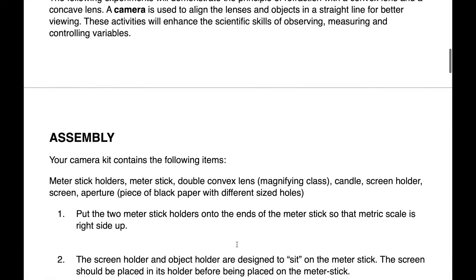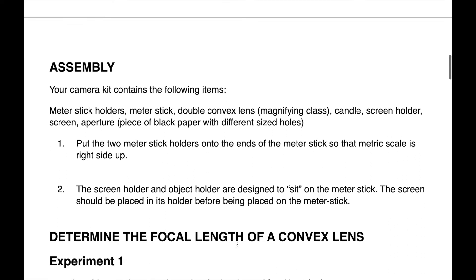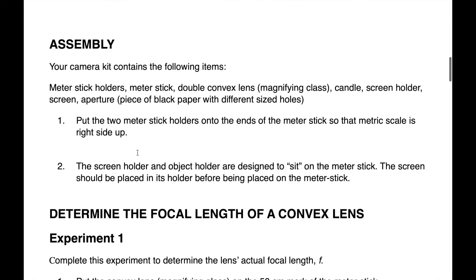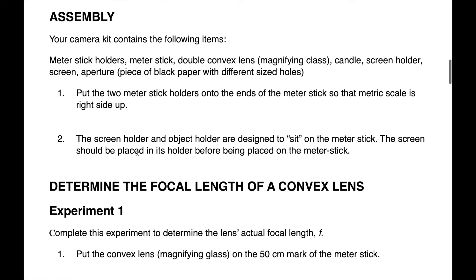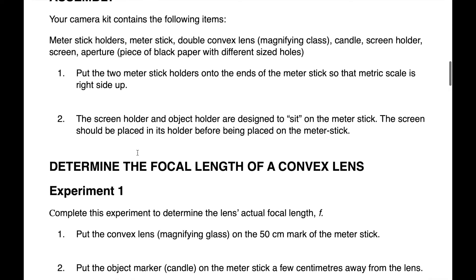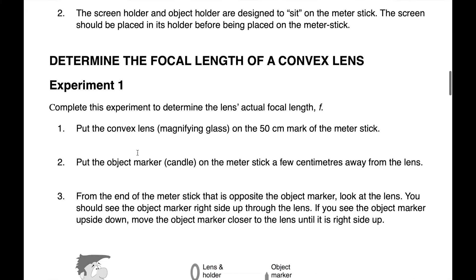In this experiment we're going to see how a convex lens can produce an image just like a camera or just like your eye. You're going to have a meter stick and some meter stick holders, a double convex lens — in our case a magnifying glass — a candle, a screen holder, a screen, and an aperture which is just a piece of black paper with two different sized holes in it. The first thing we're going to do is put the two meter sticks onto the holders and set up the candle at one end.